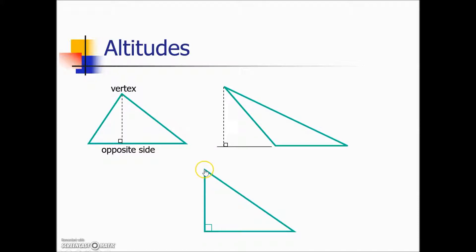Altitudes, sometimes when drawn from a vertex, are actually a side of a triangle. If we were drawing an altitude from this vertex, we want this to be a straight line to the opposite side that forms a right angle. Because this is a right triangle, it ends up that it just runs along the side of the triangle.